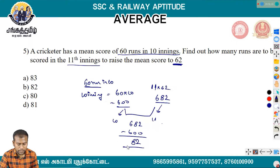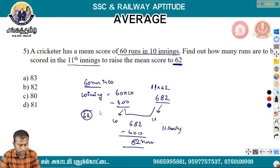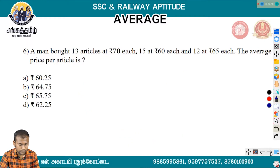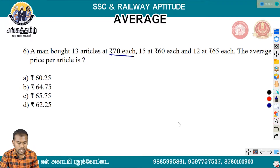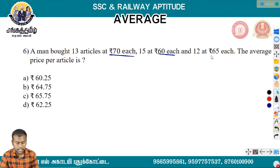That gives 82. So the cricketer needs to score 82 runs in the 11th innings to raise the mean score to 62.